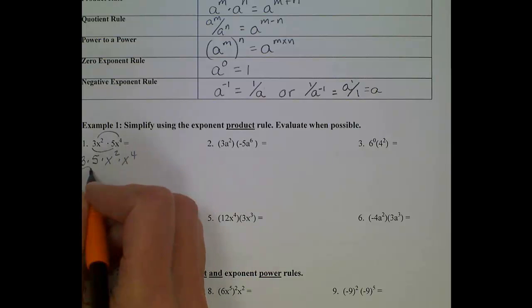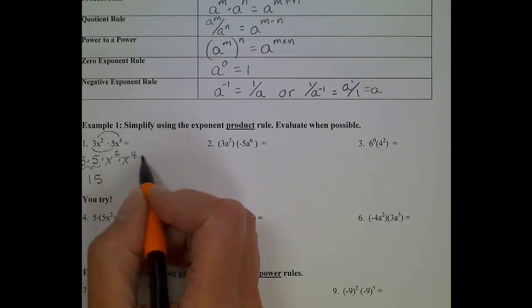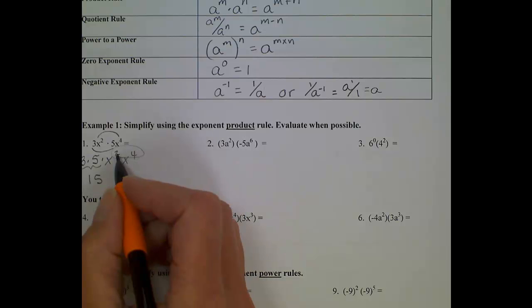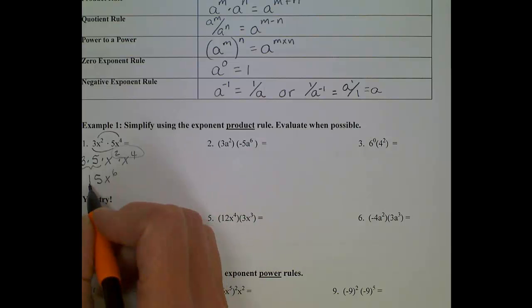Well, 3 times 5, when we evaluate it, gives you 15. When we have two variables with exponents, we add the exponents when we're multiplying. So this becomes x to the 6th. Final answer, 15x to the 6th.